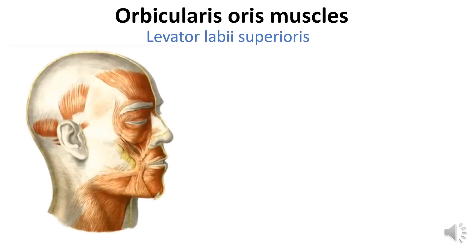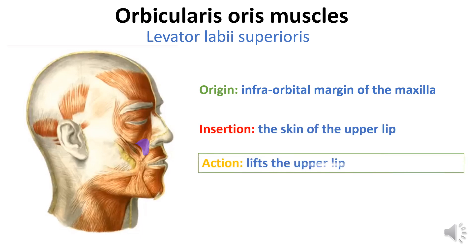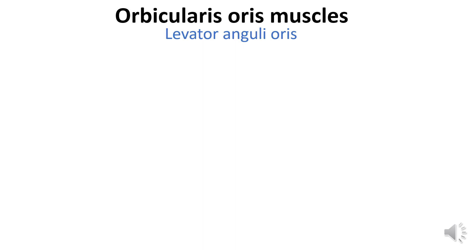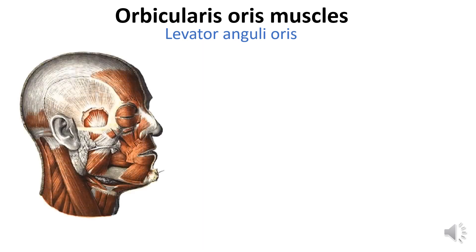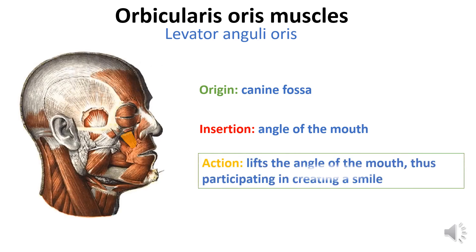Levator labii superioris originates from the infraorbital margin of the maxilla and inserts into the skin of the upper lip. This muscle lifts the upper lip. Levator anguli oris is covered by two muscles: the nasalis muscle and the zygomaticus major muscle. It originates from the canine fossa and inserts into the angle of the mouth. This muscle lifts the angle of the mouth, thus participating in creating a smile.